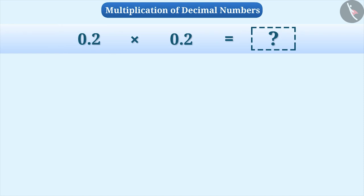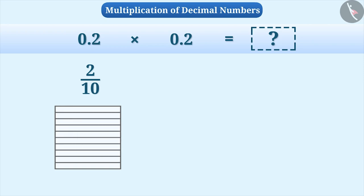Let me tell you. First number is 0.2 which can be expressed in fractions as 2 by 10. To represent this, we will consider a square as one unit and divide it horizontally into 10 equal parts. We will shade two parts in it.